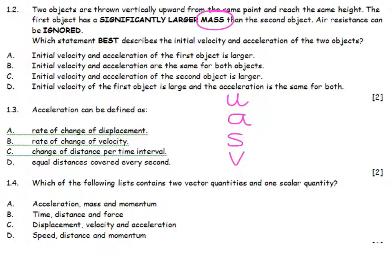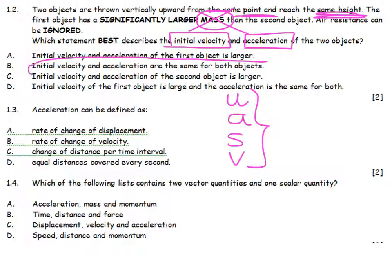These two balls have been thrown up from the same point, they reach the same height, and therefore everything else about them must be the same. The initial velocity, they must have started with the same velocity, and they certainly must have had the same acceleration. So velocity and acceleration are the same for both objects.